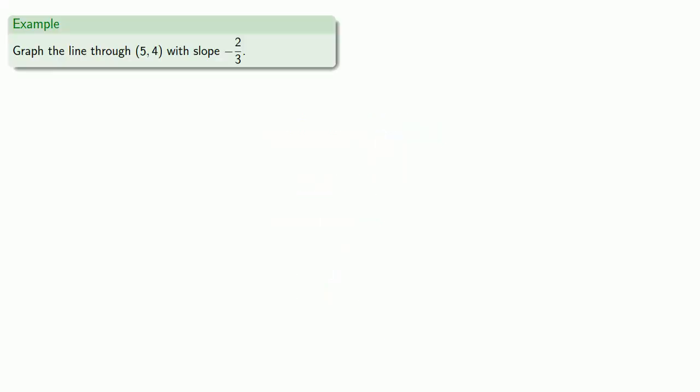Suppose we want to graph the line through the point (5, 4) with slope negative 2 thirds. So we'll begin by plotting the point (5, 4).